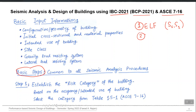The second method is RSA — Response Spectrum Analysis. In this method, the future earthquake is not represented by Ss and S1 only; it is represented by the complete response spectrum of the future earthquake, which is a graph of spectral acceleration versus time period.